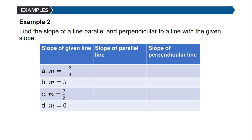Let's go through a quick exercise to find slopes of parallel and perpendicular lines. For a given slope of negative 3/4, the slope of a parallel line is also negative 3/4, because parallel lines have the same slope. The slope of a perpendicular line is the negative reciprocal: take the opposite sign and flip the fraction, giving positive 4/3.